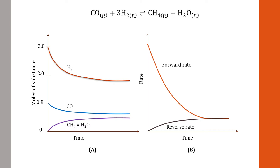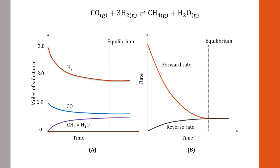Equilibrium is the state in which the rate of the forward reaction is equal to the rate of the reverse reaction. If we look at the plot of rates against time, we can identify that the point of equilibrium starts from here, where the rates of both directions are equal. So this should be our equilibrium point.